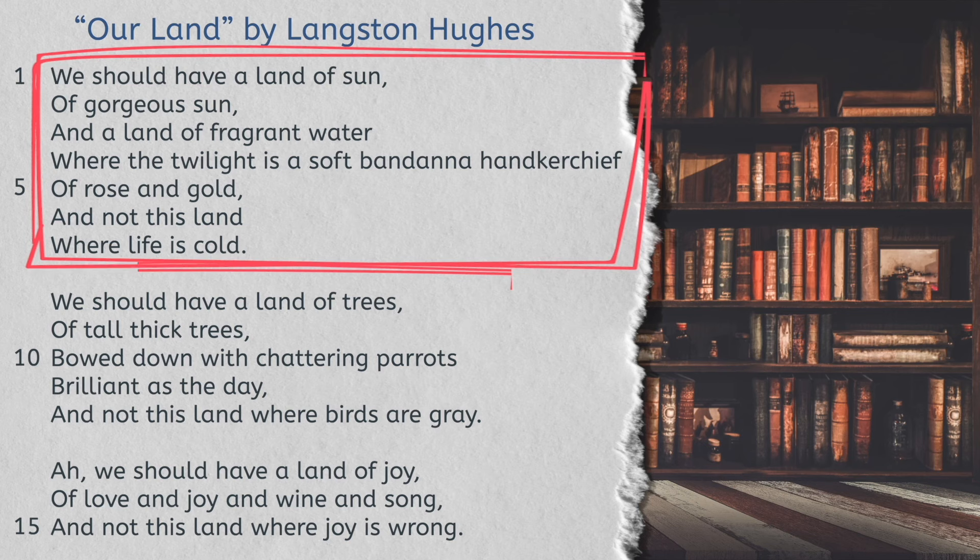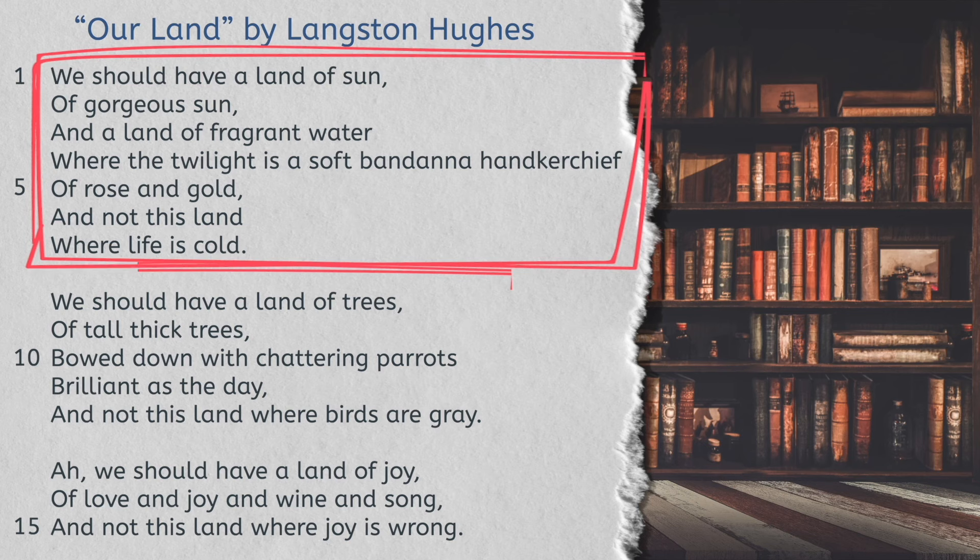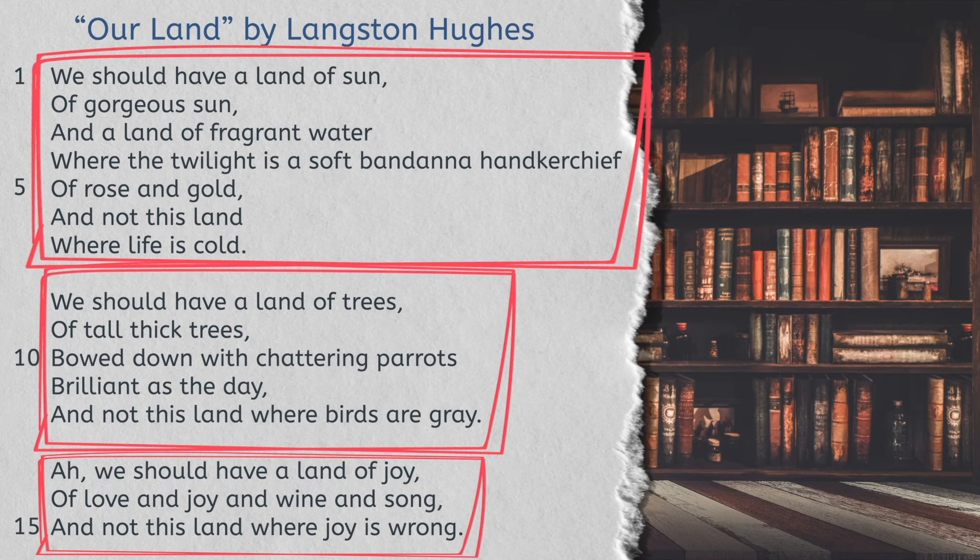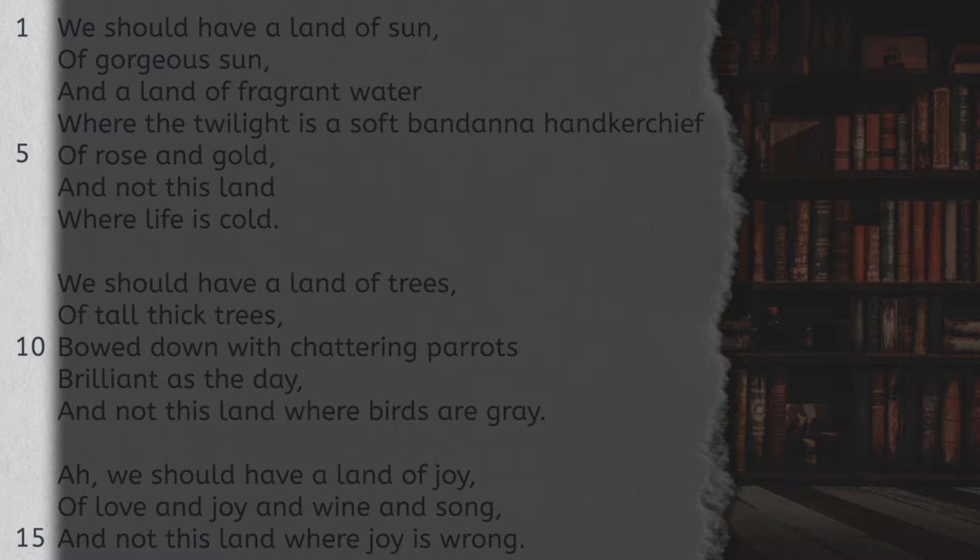How many stanzas do you see? Three! Just like when we were reading fiction, I've added some numbers on the side to help you. In poetry, we usually number the lines. The lines are numbered here, not the stanzas. What line of the poem is this? 'And not this land where birds are gray.' Even though the number isn't written next to it, we can figure out that it's line 12.